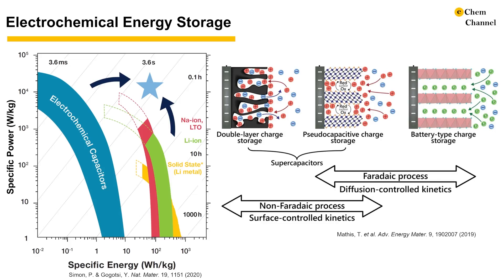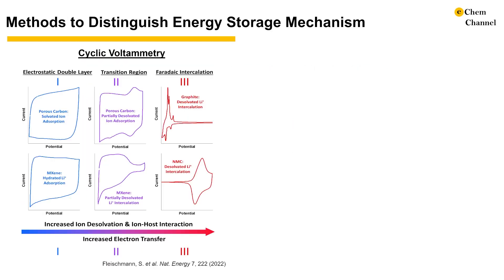This, however, raises the question: how can researchers effectively distinguish the charge storage mechanisms for a particular electrode-electrolyte system? One popular method is cyclic voltammetry, where double-layer features rectangular voltammograms, battery materials show well-defined redox peaks with clear separations, and pseudocapacitive materials possess voltammograms with the cathodic and anodic branches mirroring each other.